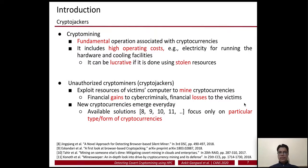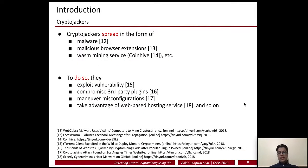Unauthorized crypto miners, generally called crypto jackers, tend to exploit the resources of the victim's computer to mine cryptocurrencies. The aim is to get financial gains while the victim suffers financial losses in terms of electricity costs. New cryptocurrencies emerge every day, and available solutions either focus on a particular type or form of cryptocurrency. Crypto jackers spread via a variety of channels — they can come as malware or malicious browser extensions, and they exploit vulnerabilities and compromise third-party plugins.